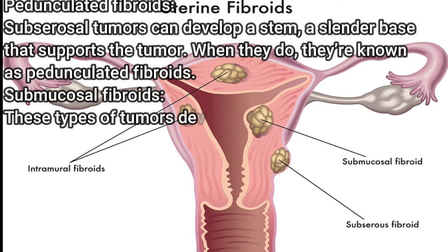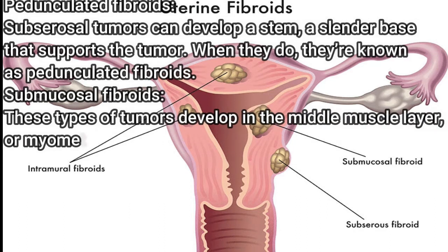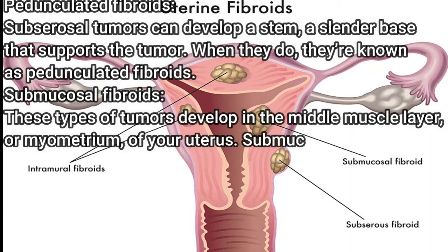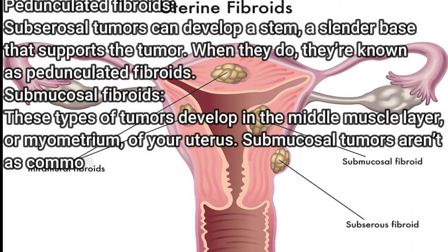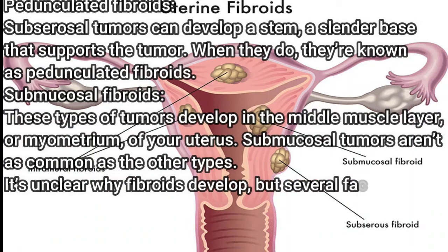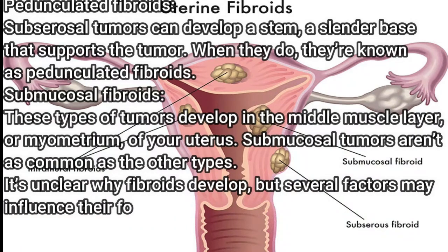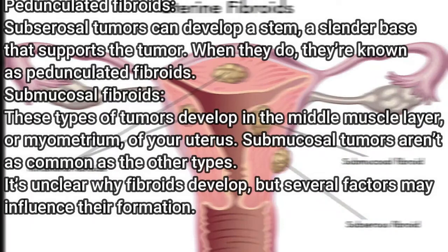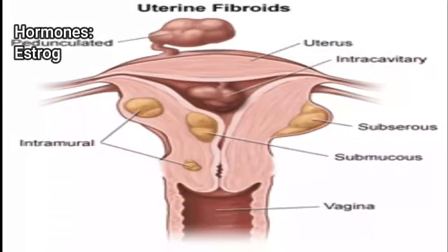Submucosal fibroids develop in the middle muscle layer, or myometrium, of your uterus. Submucosal tumors aren't as common as the other types. It's unclear why fibroids develop, but several factors may influence their formation.